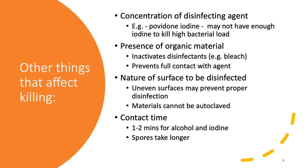Other factors that affect killing include the concentration of disinfecting agent. For example, povidone iodine may not have enough iodine to kill a high bacterial load. So when dealing with a very contaminated surface, you might need to use more or a higher concentration of iodine. Then we have the presence of organic material, for example blood or mucus. Some of these organic materials are able to inactivate disinfectants such as bleach, and some may prevent full contact with the agent, thereby protecting the microorganism.